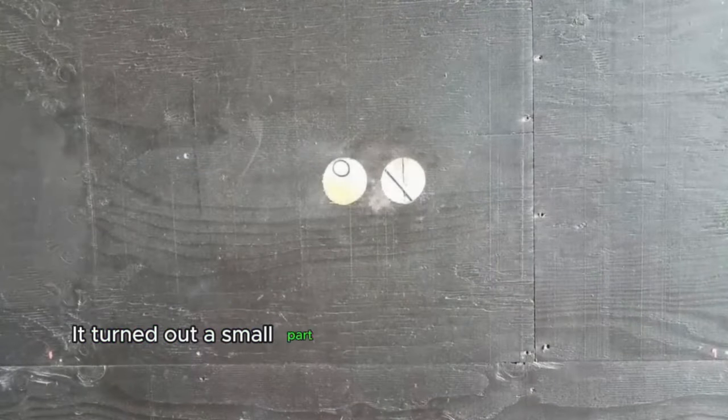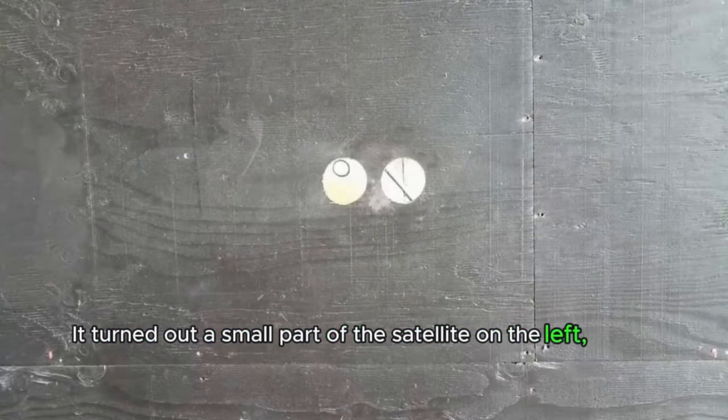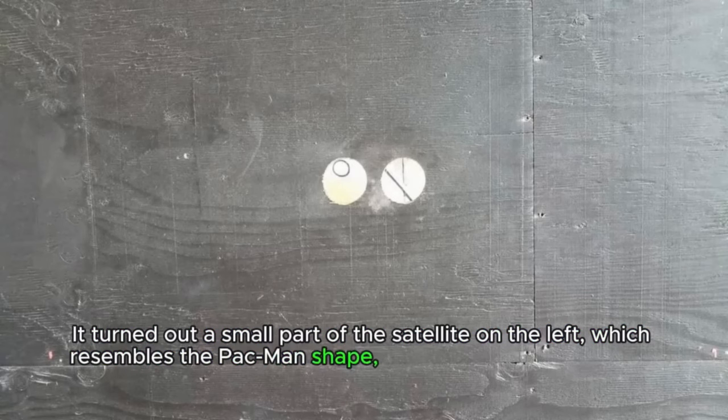The Cassini's temperature analysis has baffled scientists. It turned out a small part of the satellite on the left, which resembles the Pac-Man shape, is hot, while the rest of the surface is cold.